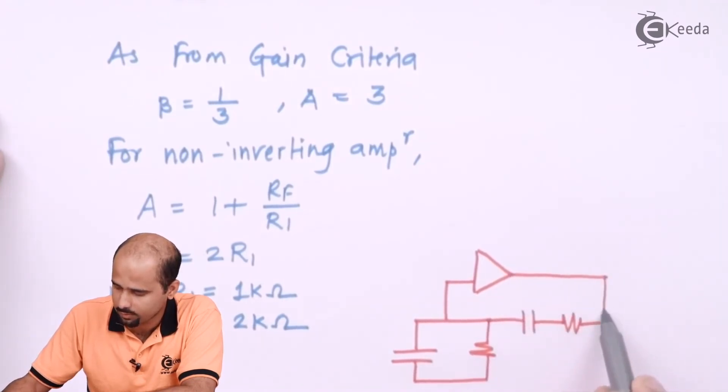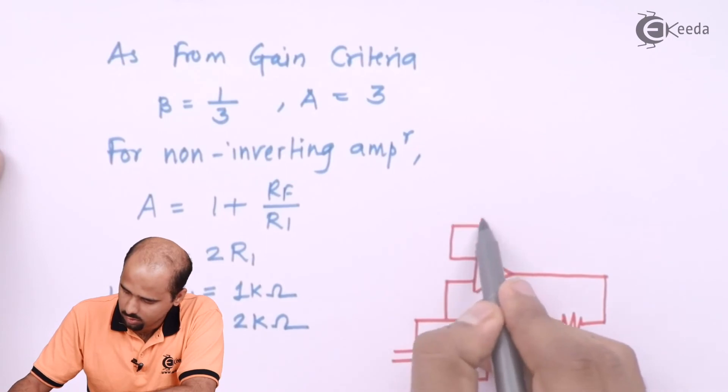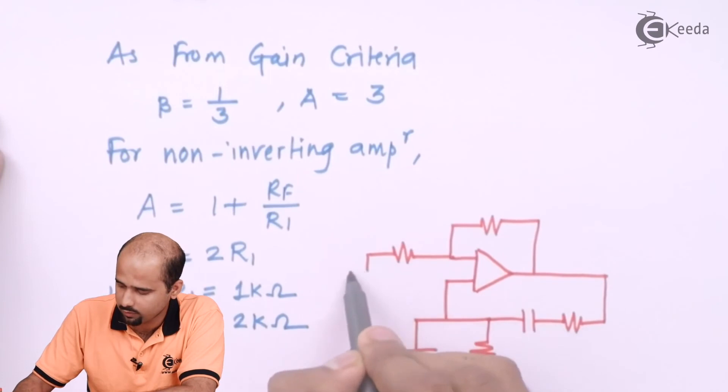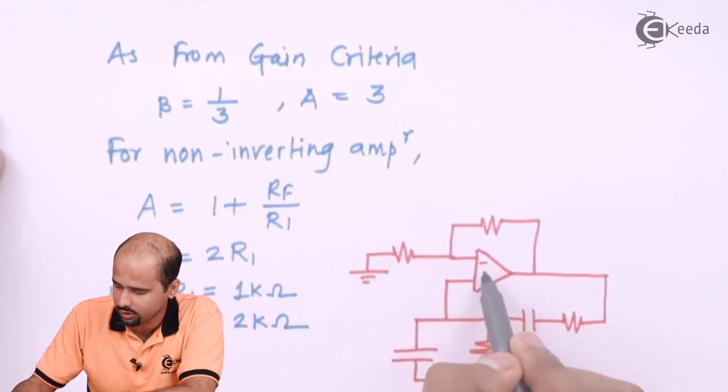This is your value of R, feedback resistance, resistance R1 connected with the ground and inverting terminal.